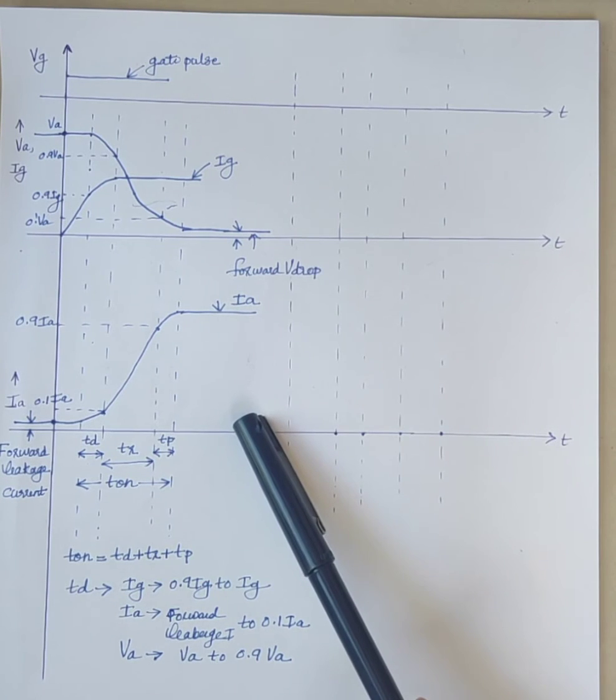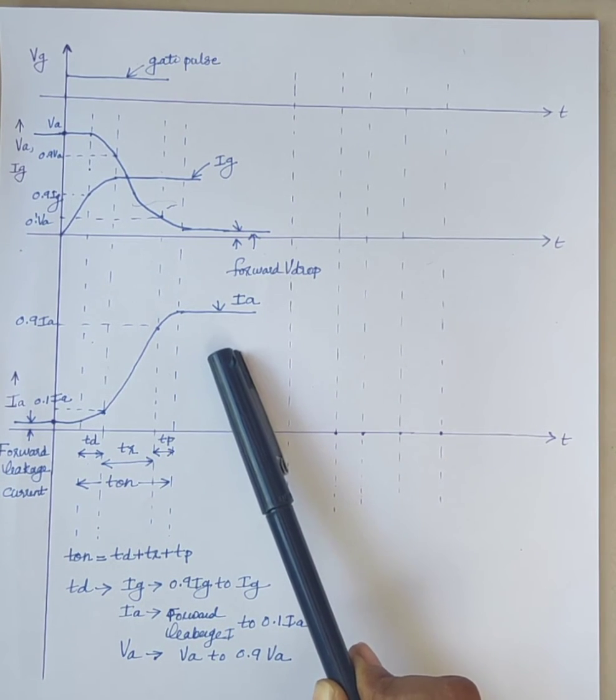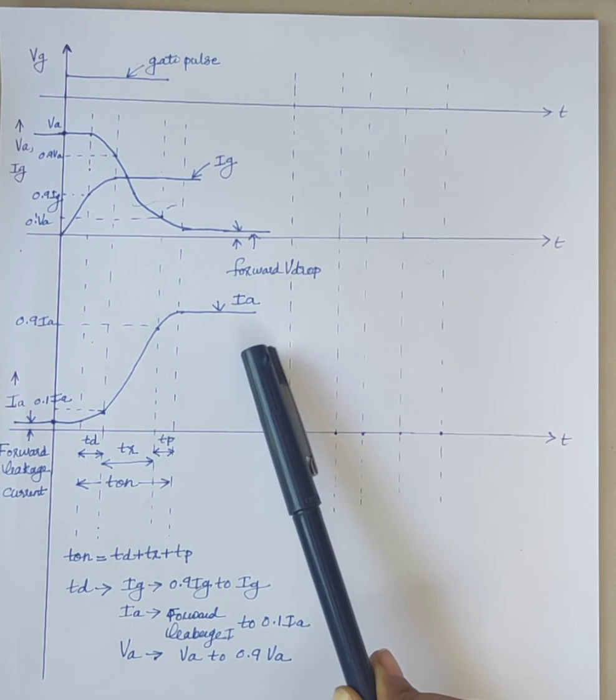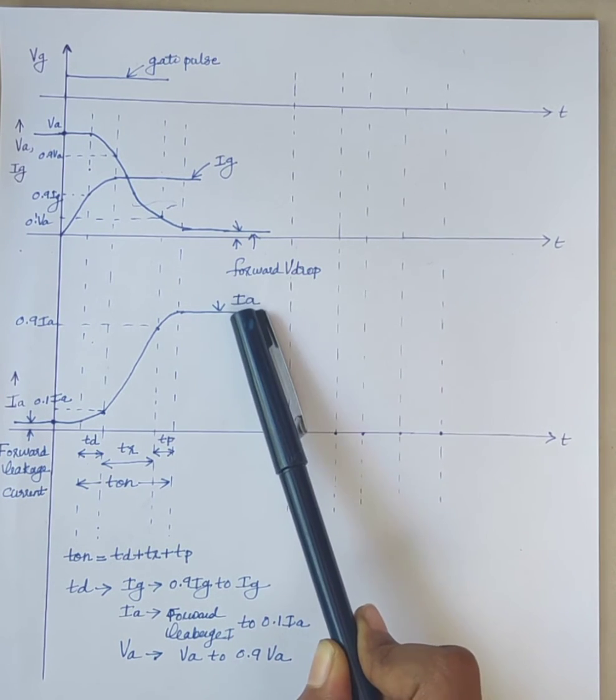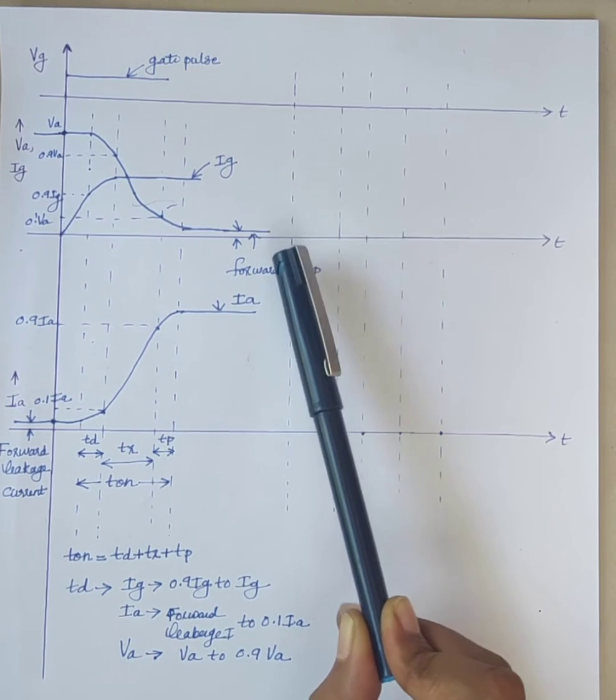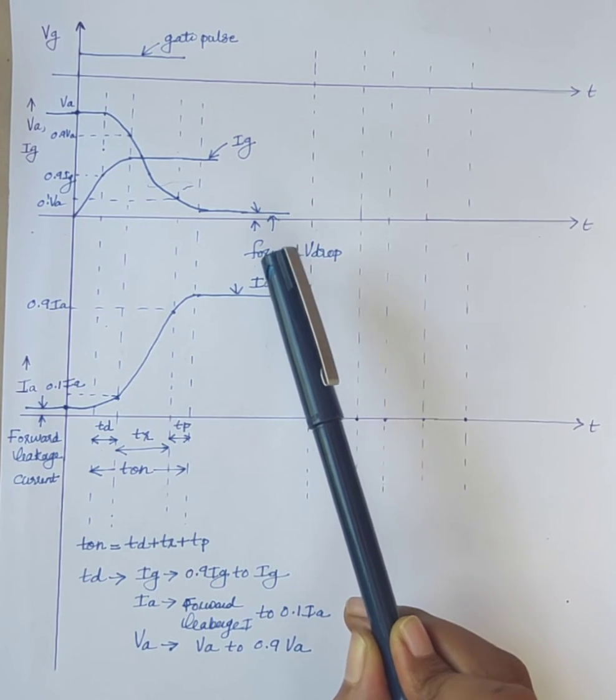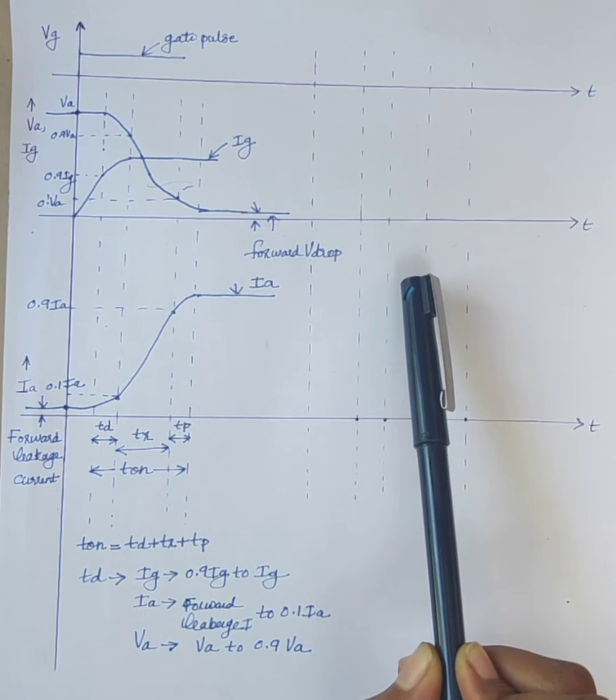From the figure it is clear that switch is in the on state. When the switch is on, current is there, voltage becomes forward voltage drop, very low value. Now we have to change the switch from on state to off state.